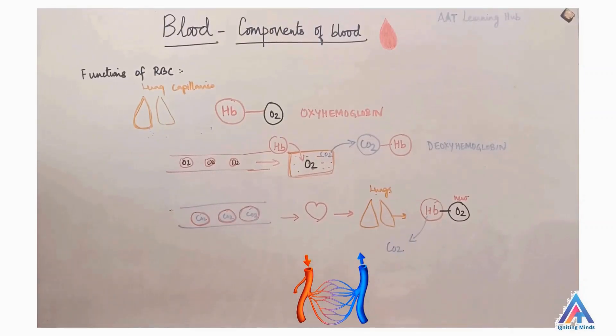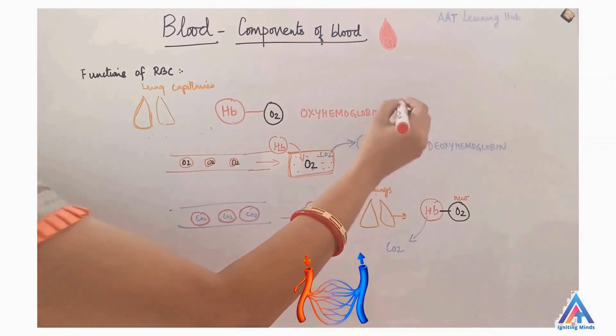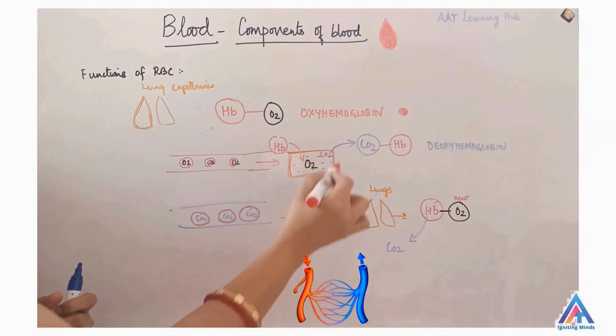How does the RBC function? In lung capillaries, hemoglobin binds to inhaled oxygen, forming oxyhemoglobin. This gives the arterial blood a bright red color. Oxygen-rich RBCs travel through the arteries to tissue capillaries.